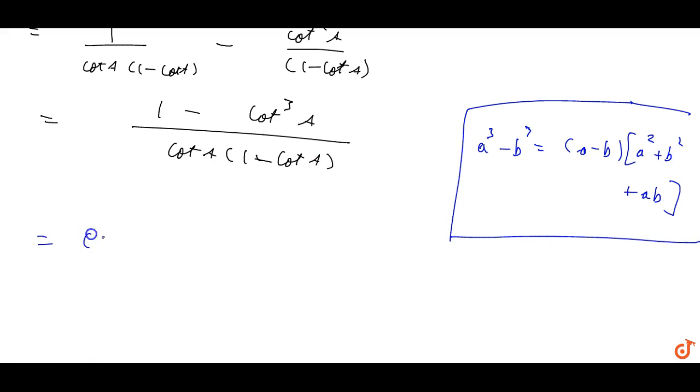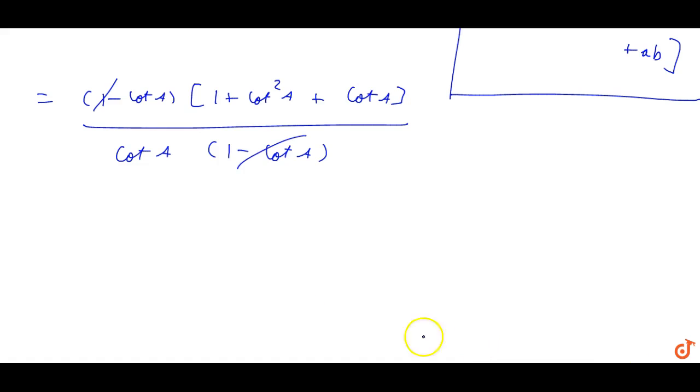So this becomes 1 minus cot A into 1 plus cot square A plus cot A upon cot A times 1 minus cot A. This simplifies to 1 plus cot square A plus cot A upon cot A.